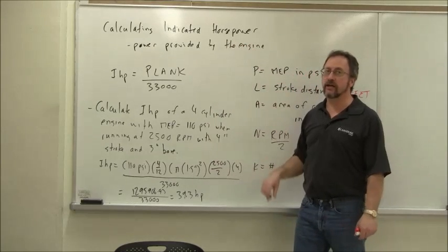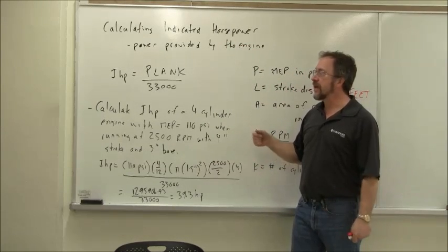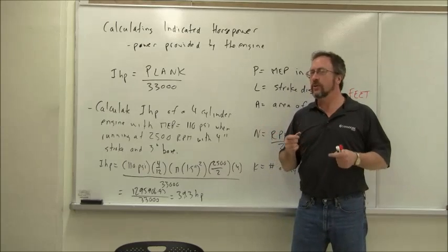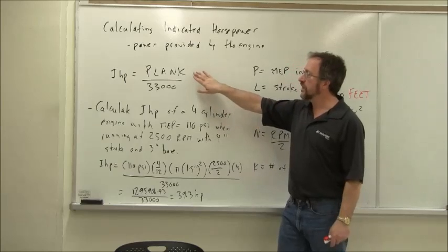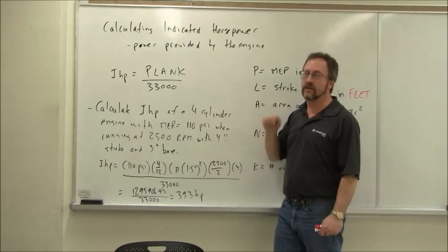In class, we looked at calculating an indicated horsepower, IHP. We did a couple of examples where we had to remember some special conversions, and I'll explain. The base formula for IHP is PLANK divided by 33,000, where each of these is a letter that means something.